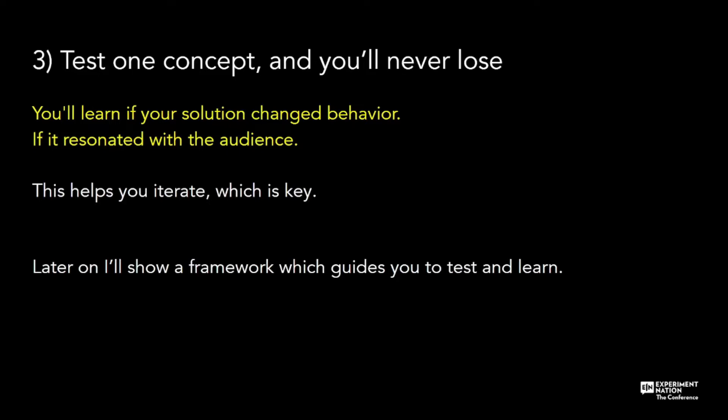Number three: test one concept and you'll never lose. If you test too many different concepts or theories, you'll never know which one moved the needle in which way. Even if the test boosts your KPI, it's only useful for that one instance. It's really hard to unpick and know what helped or what didn't help. The way I like to think of this is: a variation should answer one question. My framework also applies directly to this — I'll show it halfway through this talk.